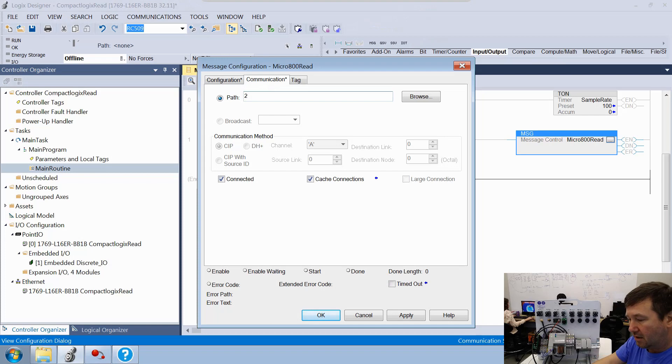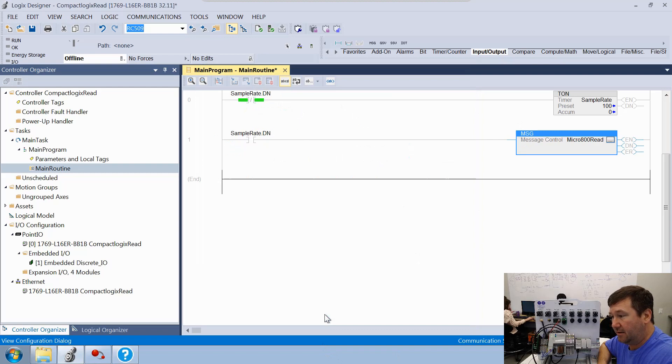So it's going to be two, comma, 192.168.1.13. And that's going to be the path to our PLC. Click OK. And let's go ahead and download this program.